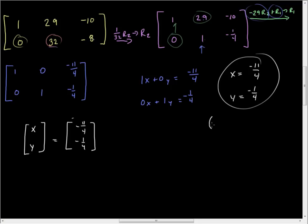This is the ordered pair negative 11/4, comma, negative 1/4, and that's your answer.